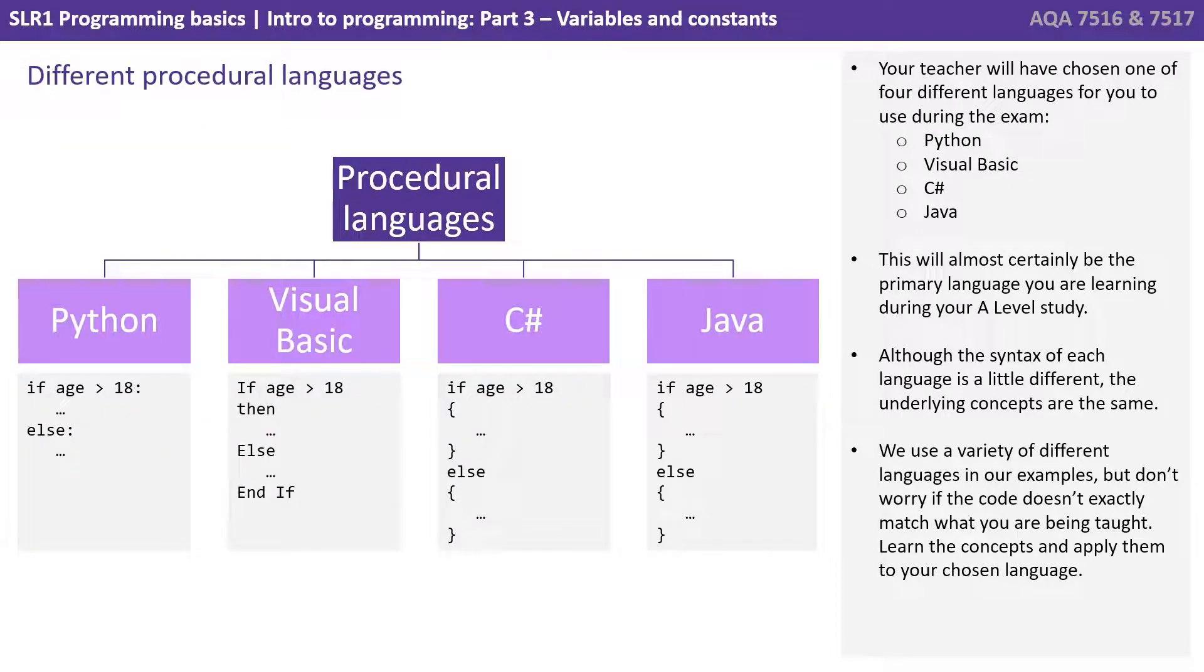Your teacher will have chosen one of four different languages for you to use during the exam: Python, VB, C-sharp, or Java. And this will almost certainly be the primary language that you're studying during your A-level. Although the syntax of each language is a little different, the underlying concepts remain the same. We use a variety of different languages in our examples, but don't worry if the code doesn't exactly match what you're being taught. Learn the concepts and apply them to your chosen language.